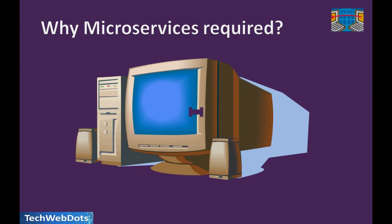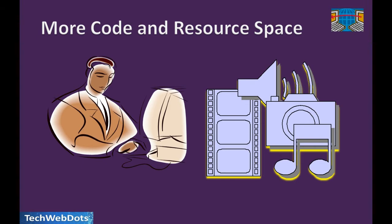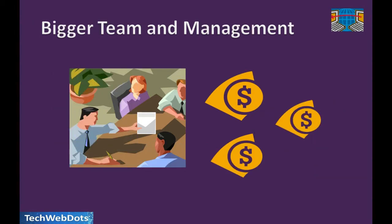With the internet, we had lots of code and resources occupying a lot of space. We didn't want our costs or architecture to grow, and we didn't want big machines. When the internet came, we could host our application on a single server. But maintaining a bigger team, bigger management, and bigger code still required spending lots of money.